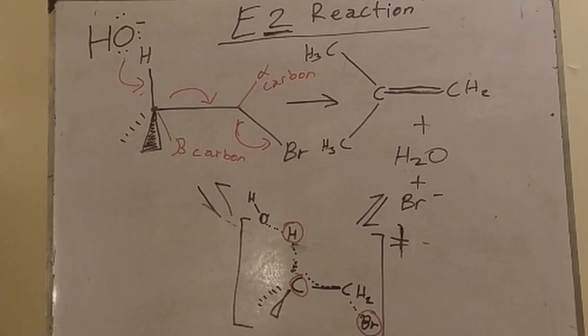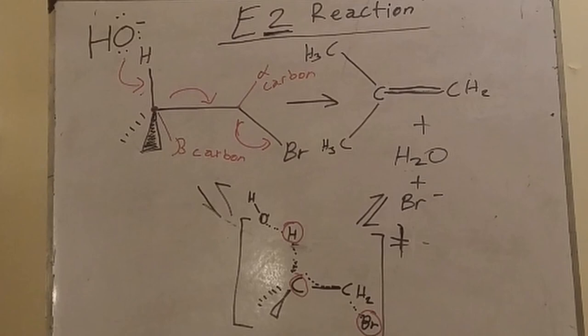The carbon-hydrogen bond is getting weaker and weaker, and the hydrogen-oxygen bond is getting stronger and stronger. The bromine-carbon bond is getting weaker and weaker, eventually leading to the leaving of the proton and the bromide.